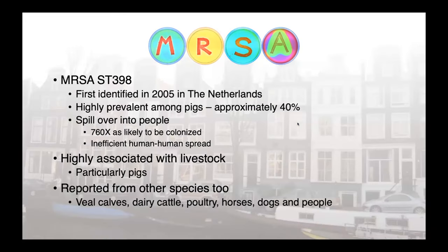ST398 is a really interesting story. It was first identified in 2005 in the Netherlands and was found to be highly prevalent among pigs — approximately 40% of animals were colonized. Where this became really problematic is that in people working with pigs, we were seeing spillover and potentially infections in some of those individuals. In the Dutch population, people working with pigs were found to be 760 times more likely to be colonized than the general population.